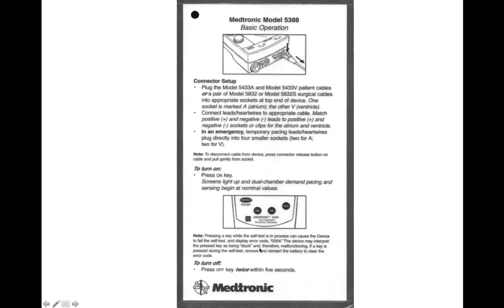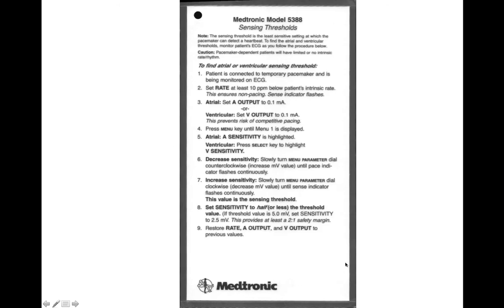This section goes over your threshold and sensitivity settings — directions on finding your ventricular or atrial sensitivity threshold or sensing threshold. The patient is connected to a temporary pacemaker and monitored on the ECG. You set the rate to at least 10 below the patient's intrinsic rate to ensure non-pacing, then decrease your sensitivity from the very low point all the way up to find that threshold.